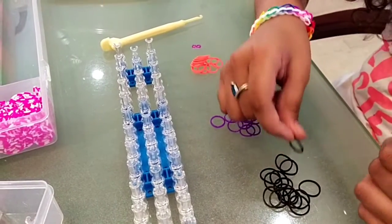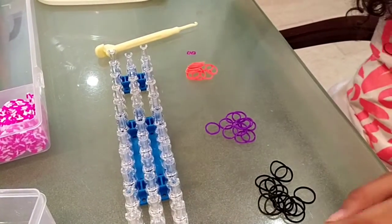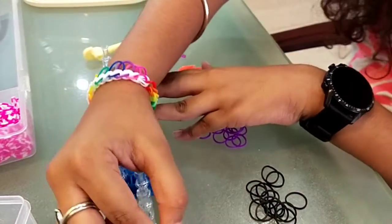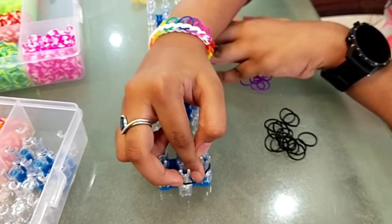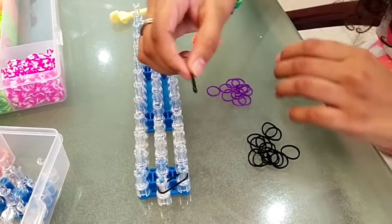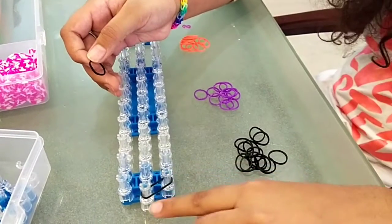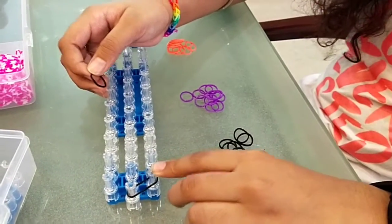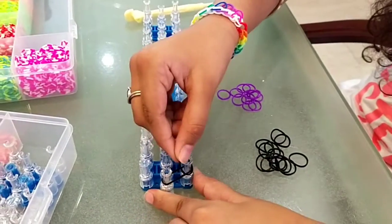So let's get started. I'm making a Halloween themed bracelet because I like making bracelets for different festivals. Your first rubber band will go from this peg to this peg.